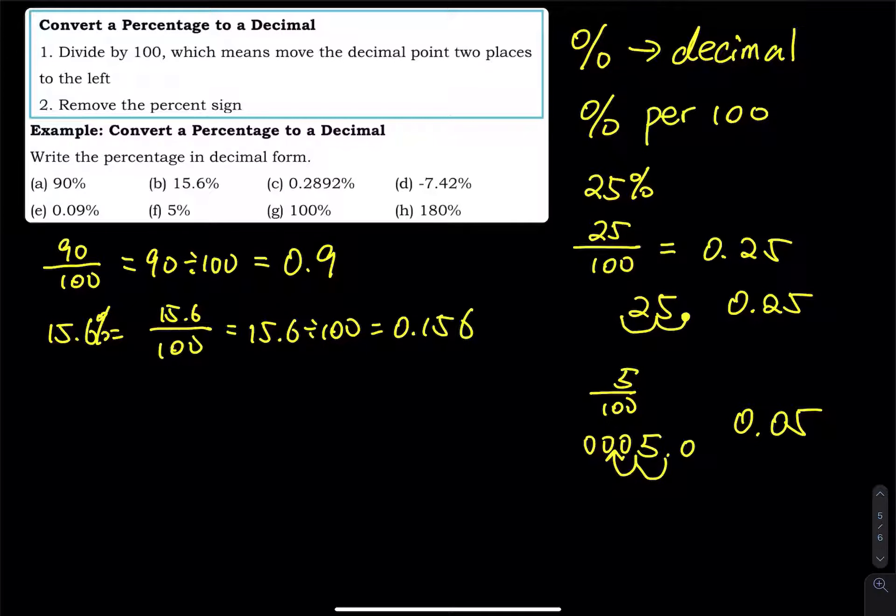And then C is 0.2892%. So this is 0.2892 divided by 100. So that one gives you 0.002892.